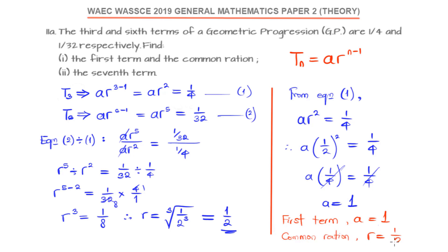The first term A is 1 and the common ratio R is 1/2. Now that is not the end of the question. We are also asked to find the seventh term using the general formula that we have gotten initially, the general formula for the nth term.